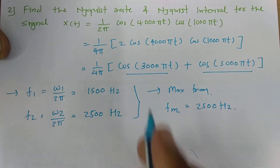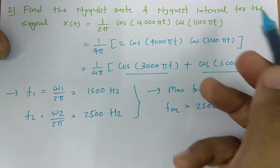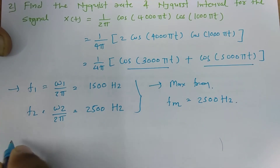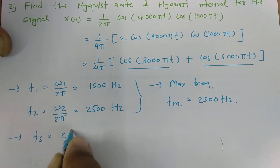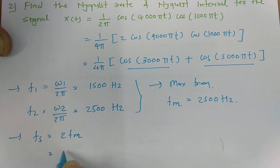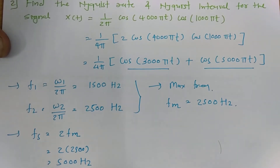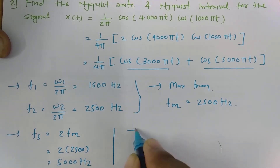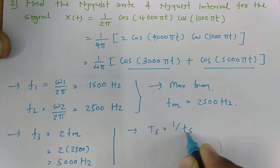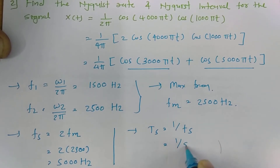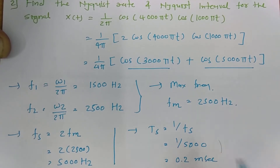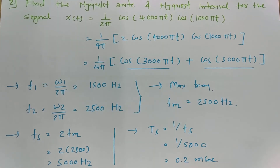The Nyquist rate is fₛ = 2fₘ = 2 × 2500 = 5000 Hz. The Nyquist interval is Tₛ = 1/fₛ = 1/5000 = 0.2 milliseconds. This is how we identify the Nyquist rate and Nyquist interval for this signal.